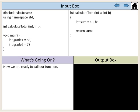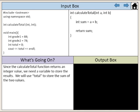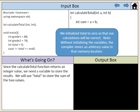Now we are ready to call our function. Since the calculateTotal function returns an integer value, we need a variable to store the results. We will use total to store the sum of the two values. We initialize total to zero so that our calculations will be correct. Note, without initializing the variables, the compiler stores an arbitrary value in that memory location.